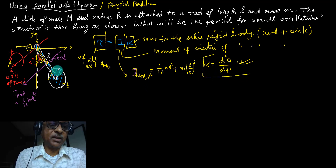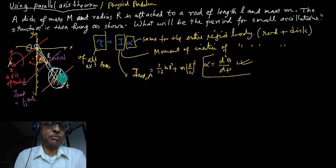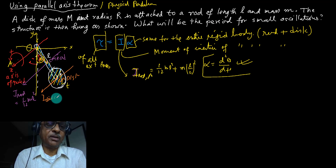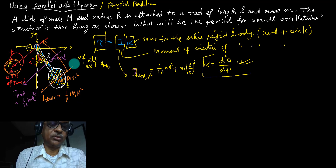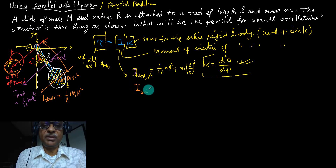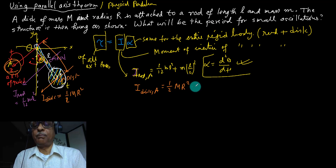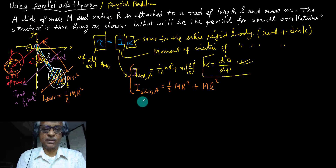For the disc: about its own center-of-mass axis the moment of inertia is (1/2)Mr². The center of mass of the disc is at distance L from the pivot, so using the parallel axis theorem: I_disc about A = (1/2)Mr² + ML². The total moment of inertia I is the sum of I_rod and I_disc about axis A.